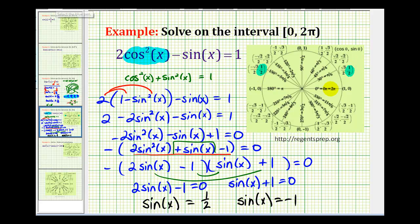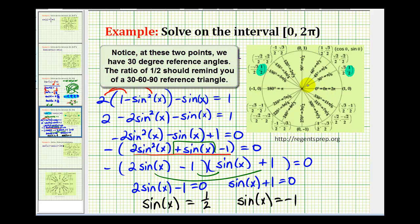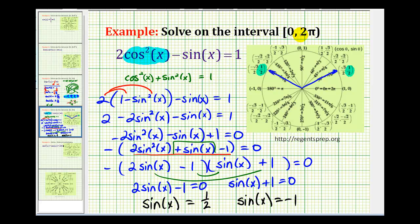So this tells us that the terminal sides of the angles that have a sine function of 1/2 would be here and here. So on the given interval we would have x = π/6 and x = 5π/6.